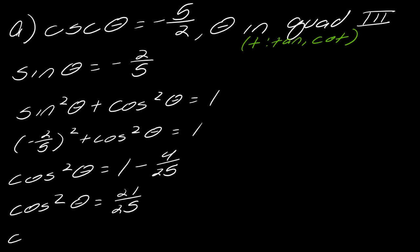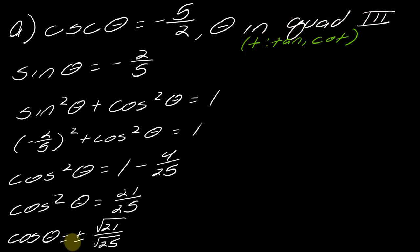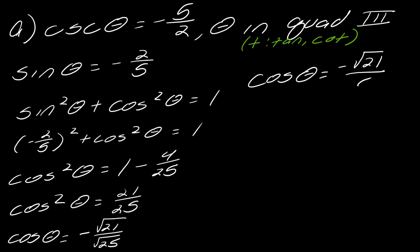So cosine of theta is going to equal plus or minus the square root of 21 over the square root of 25. I always write the plus or minus, and then the quadrant information tells me the sign. Looking at my cheat sheet, I know this needs to be negative. So the value of cosine of theta is the negative square root of 21 over 5.